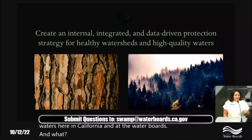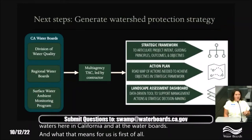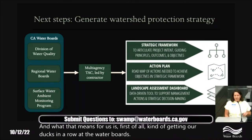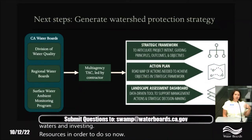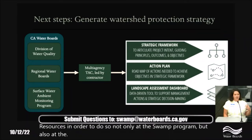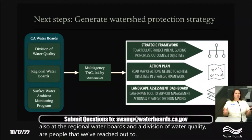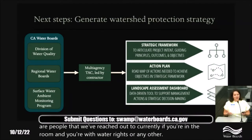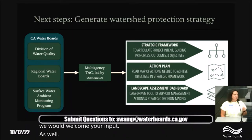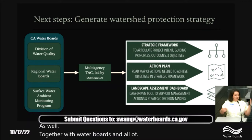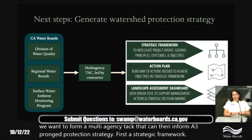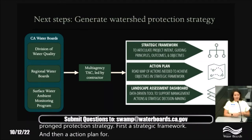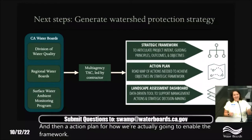This means first getting our ducks in a row at the water boards — finding people who are passionate about protecting waters. Not only in the SWAMP program, but also at the regional water boards and the Division of Water Quality. Together with water boards and partner agencies, we want to form a multi-agency TAC that can inform a three-pronged protection strategy: first, a strategic framework; second, an action plan for how to enable the framework; and third, the dashboard I've just described.